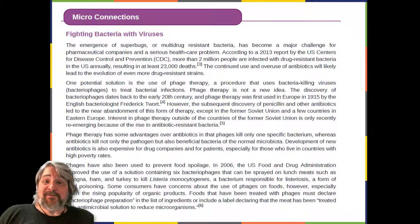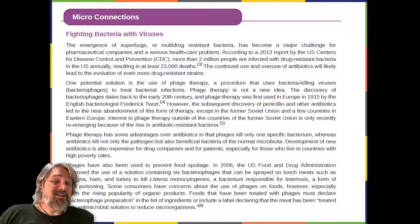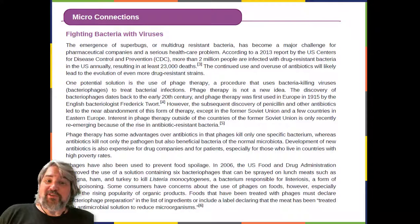Phages have also been used to prevent food spoilage. In 2006, the U.S. Food and Drug Administration approved the use of a solution containing six bacteriophages that can be sprayed on lunch meats such as bologna, ham, and turkey to kill Listeria monocytogenes, a bacterium responsible for listeriosis, a form of food poisoning. Some consumers have concerns about the use of phages on foods, especially given the rising popularity of organic products.